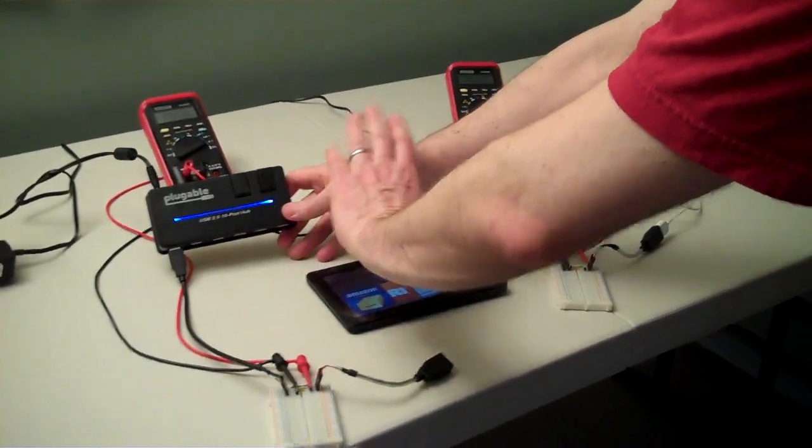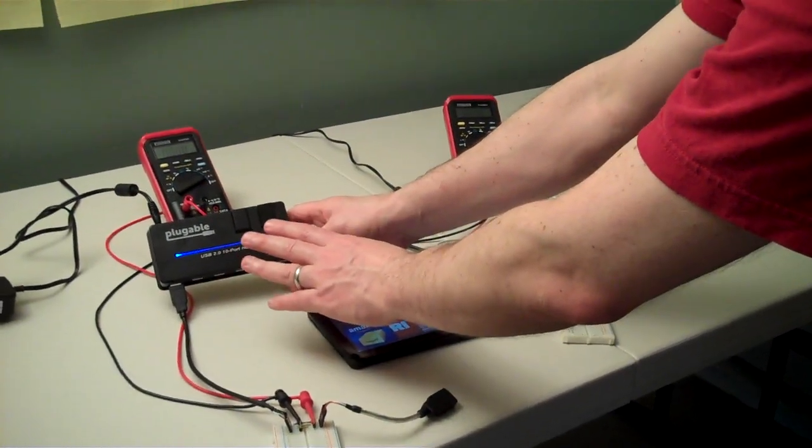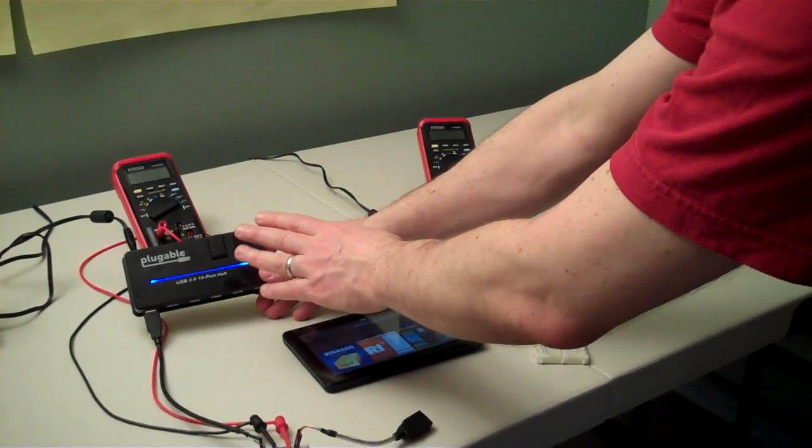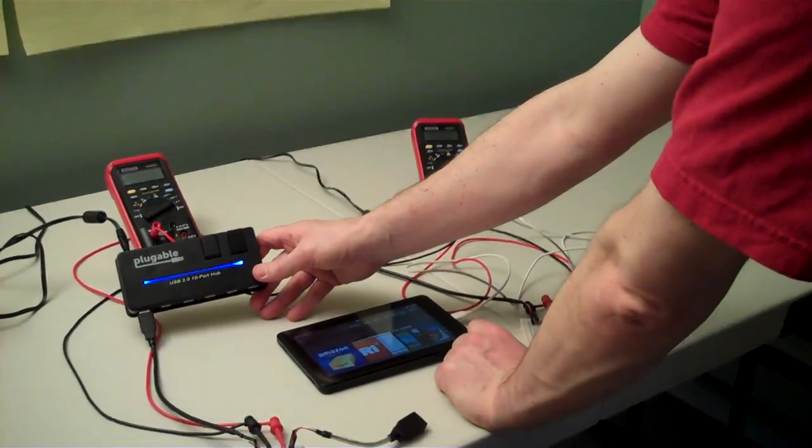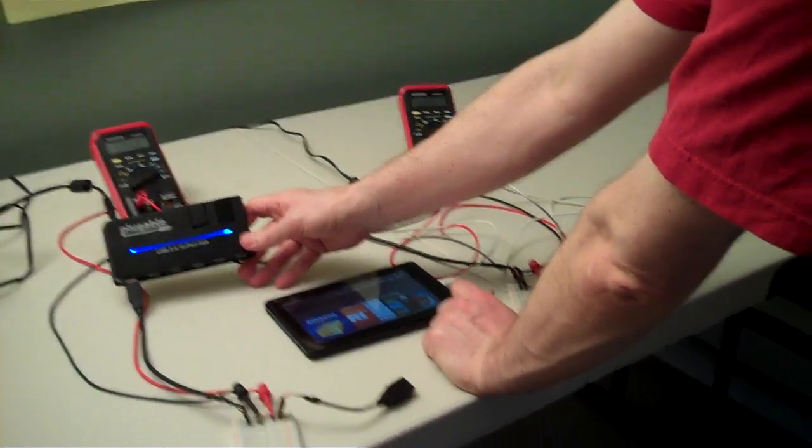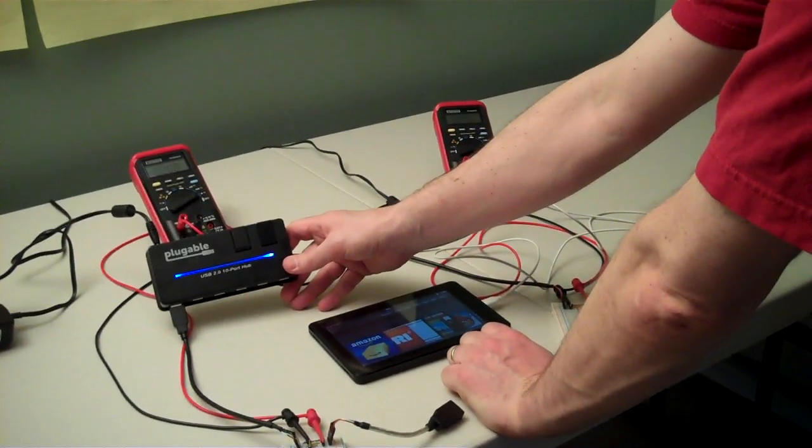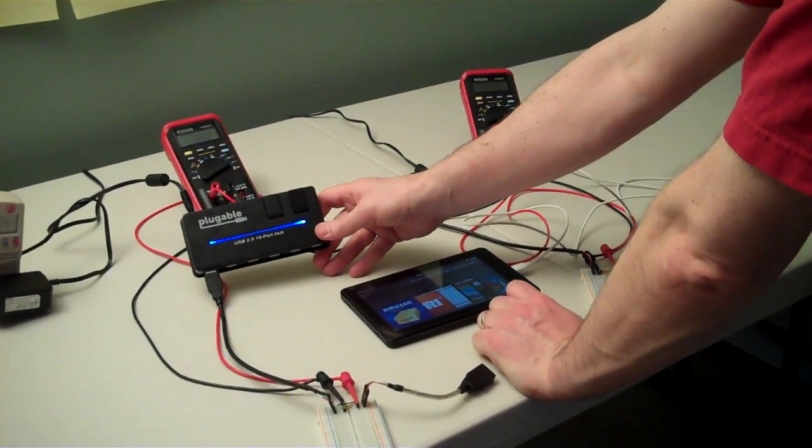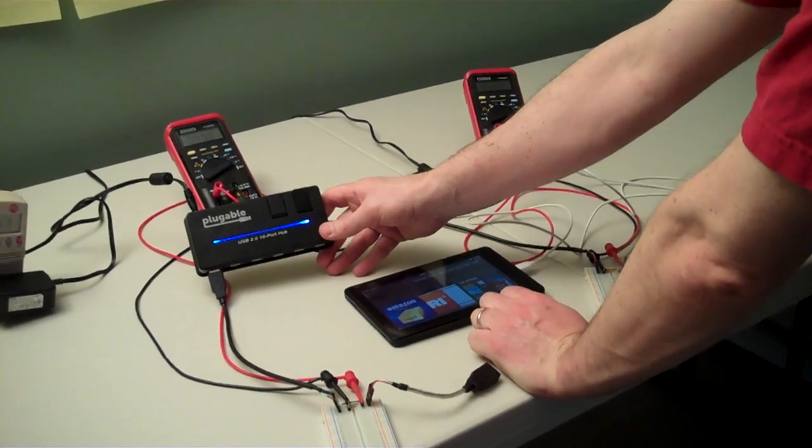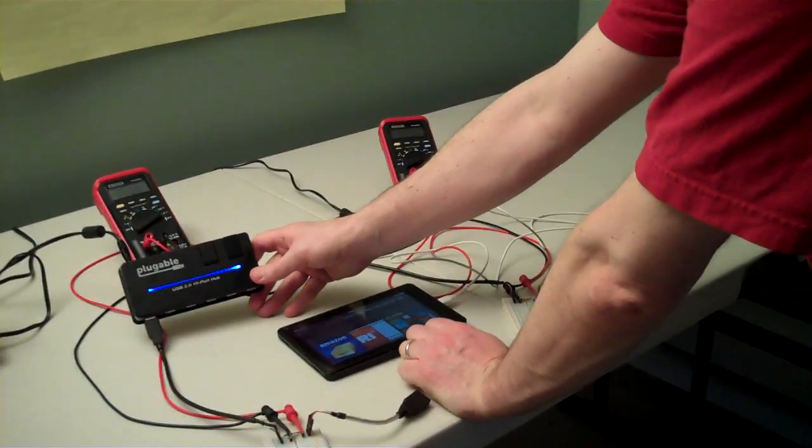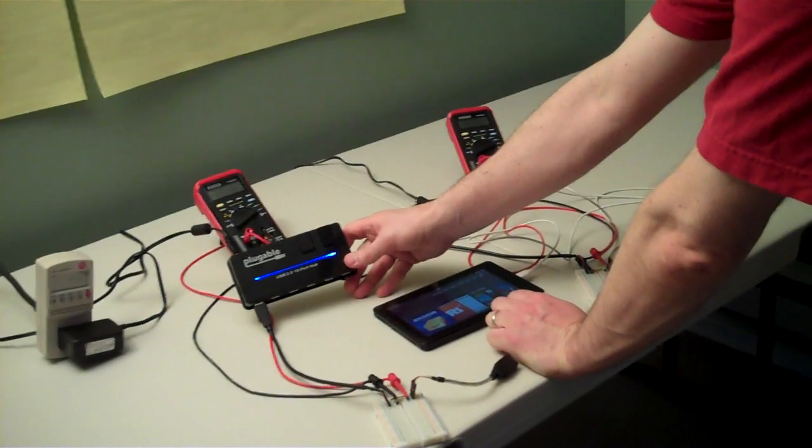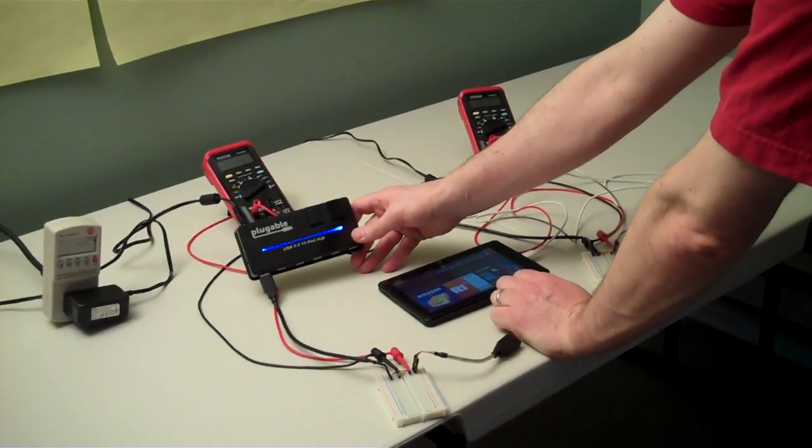So like this hub here is our best-selling pluggable hub. We sell thousands of these every month and it's got a 2.5 amp adapter. So a lot of people assume it should be able to then charge anything up to 2.5 amps. But USB 2, as originally designed, doesn't work that way. It's actually up to the device to negotiate for how much it's able to pull.